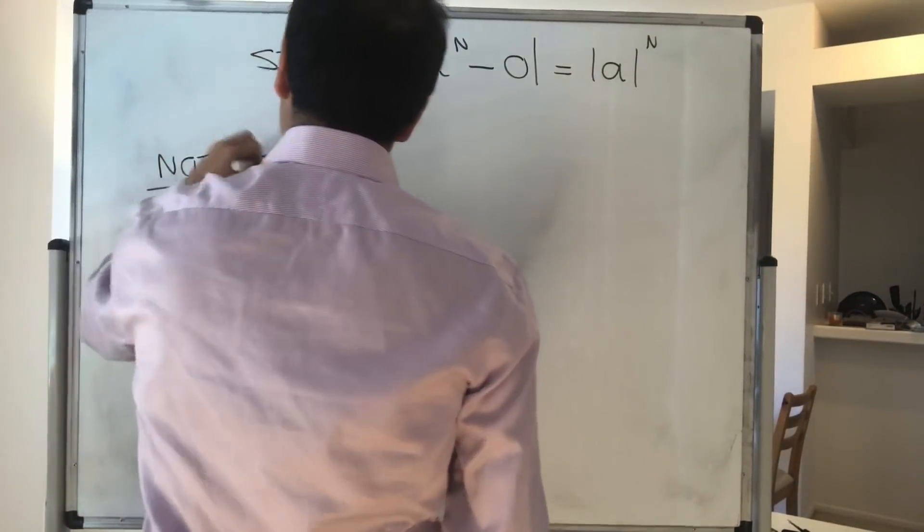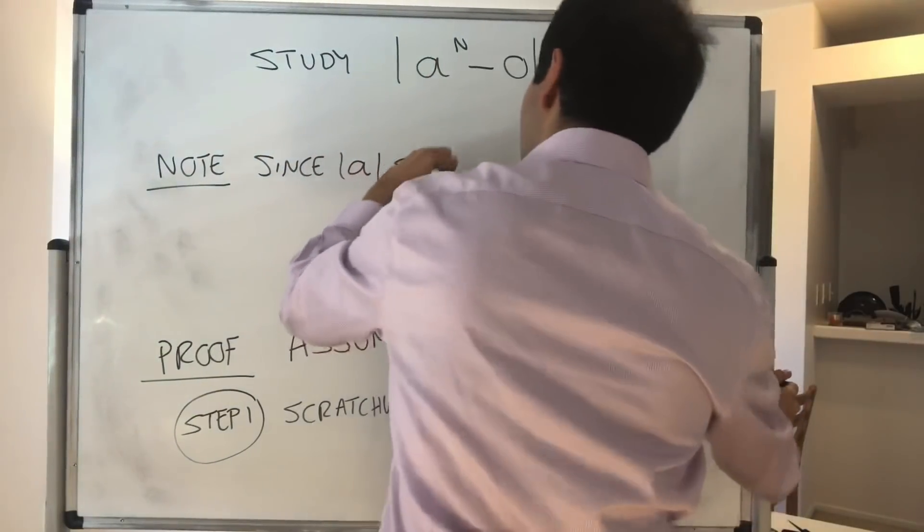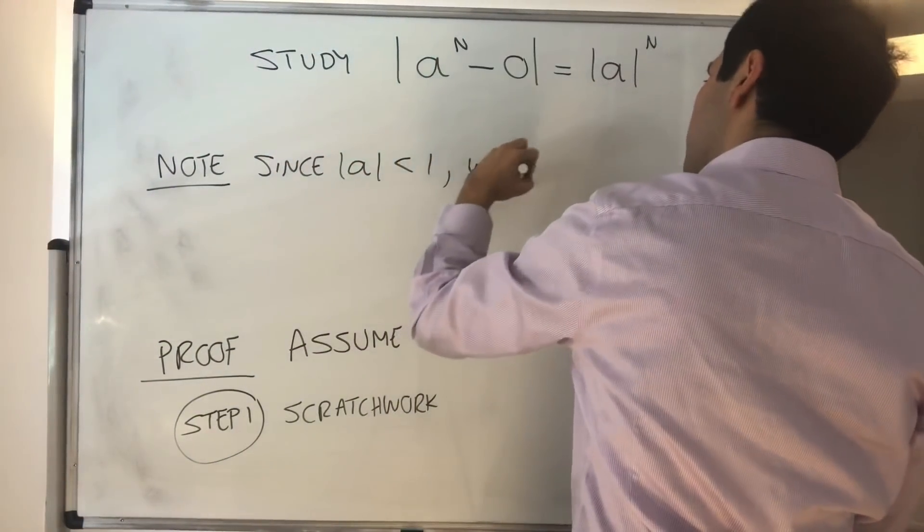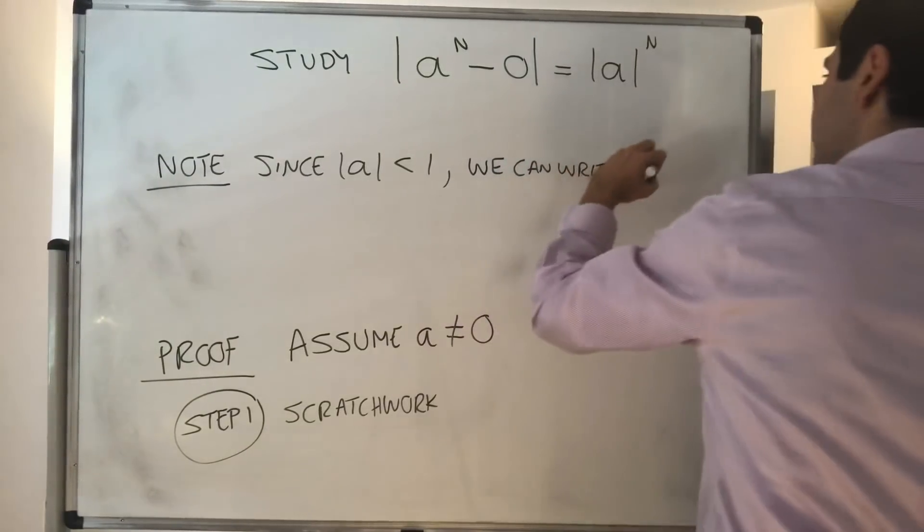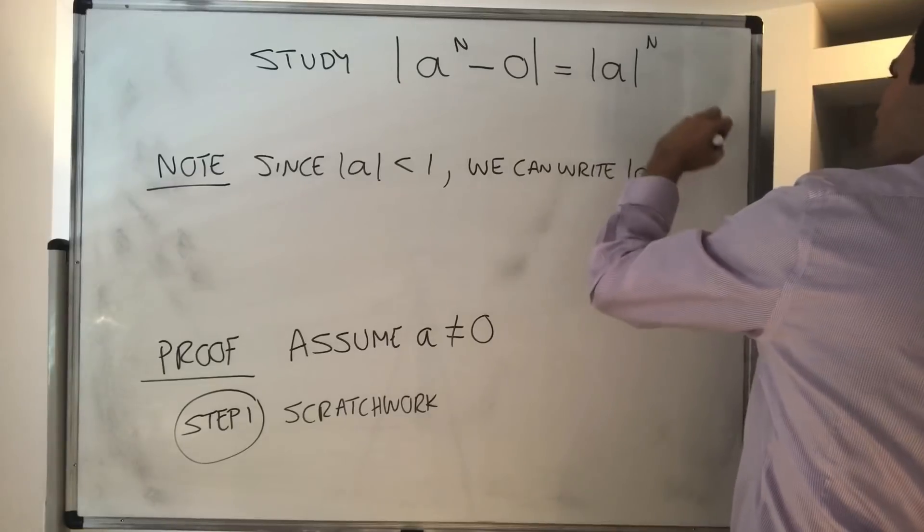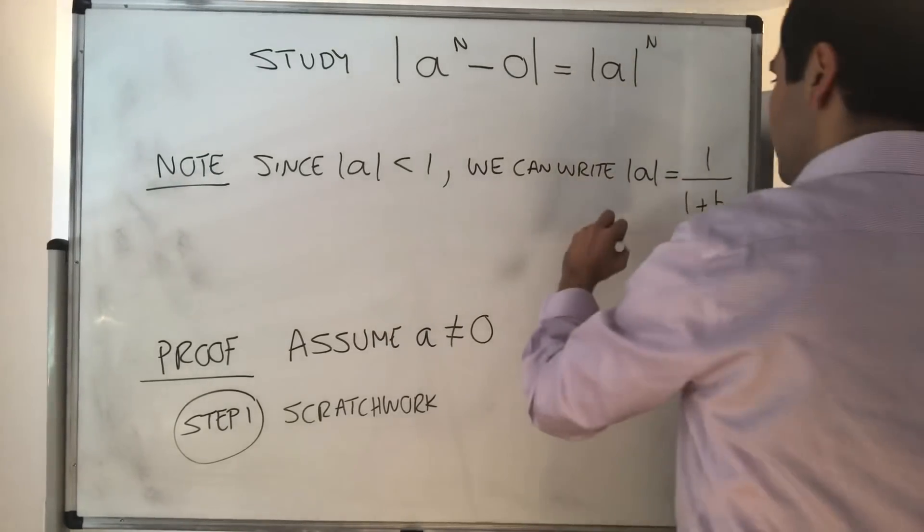So it turns out you can write this in a very useful form. Now note, since the absolute value of a is less than one, we can write absolute value of a in the form one over one plus b for some b positive.